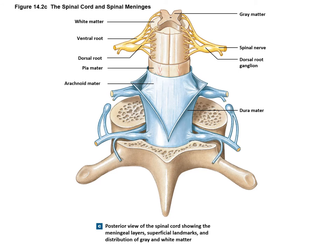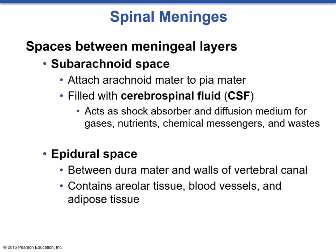Here we can see a diagram of the dura mater pulled back from the spinal cord to reveal the arachnoid mater and the pia mater — organized the same way as in the brain. There are a few spaces between some of these layers. The subarachnoid space attaches the arachnoid mater to the pia mater and is filled with cerebrospinal fluid, acting as a shock absorber and diffusion medium for gases, nutrients, chemical messengers, and wastes. The epidural space is between the dura mater and the walls of the vertebral canal, and contains areolar tissue, blood vessels, and adipose tissue.